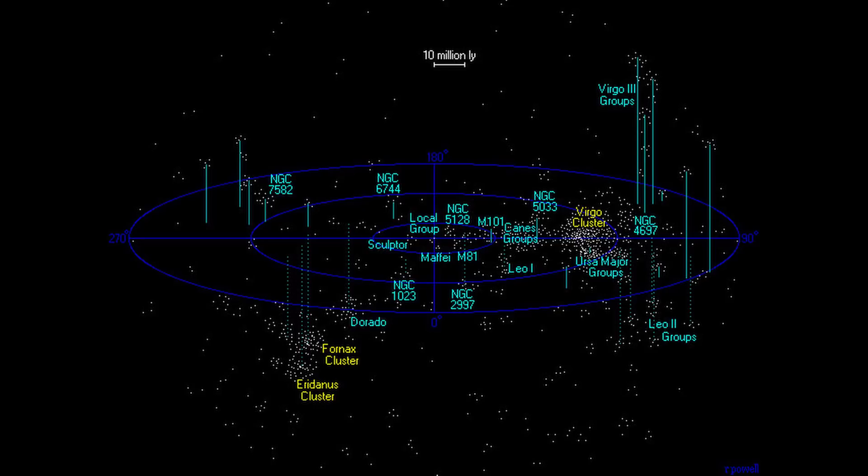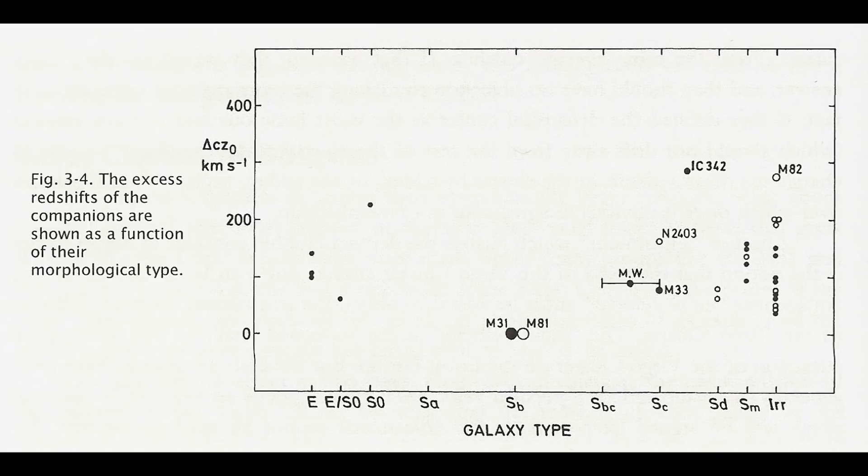The difference here reveals an important point that the smaller galaxies have a systematically higher redshift. Can we assign redshift as a function of galaxy type? In this diagram we can see the excess redshift of the companions as a function of their morphological type in the nearest two galaxy groups M81 and M31.